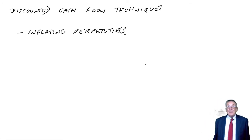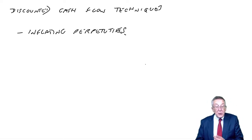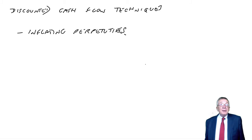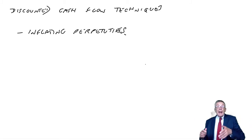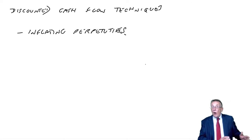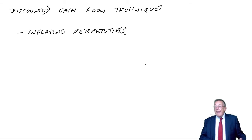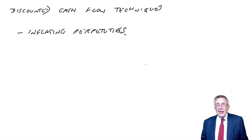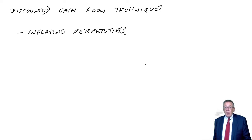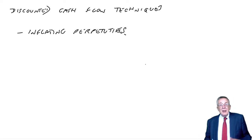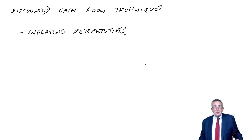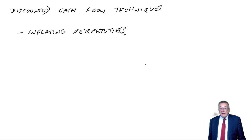There is a lot in this chapter. The next bit of the notes is headed up 'inflating perpetuities'. You should know what a perpetuity is — it's where you're expecting a cash flow each year forever. In most cases in the exam, when you're appraising a project, that's unlikely. Generally with project appraisal, we're looking over a fixed time period — maybe four years, five years, or whatever it is. However, here we're looking at something which gives a cash flow every year forever.